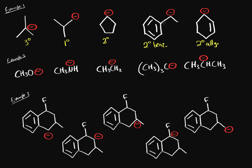Benzylic has multiple resonance forms, so we're going to rank it number one. Number two will be the allylic because it also has resonance stabilization. For primary, secondary, and tertiary: primary is out in the open with not much electron density around it, so it's better than secondary, which has carbon groups donating electron density, which is better than tertiary, which has a bunch of carbon groups donating their electron density. So that's how you rank carbanions.